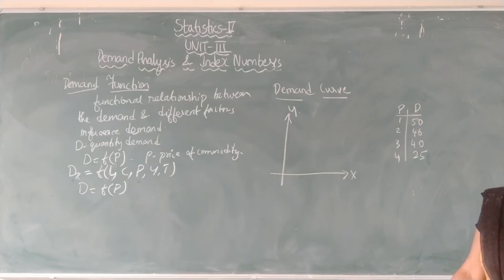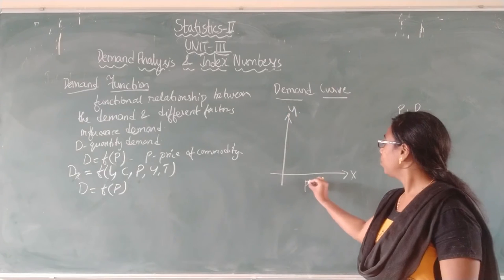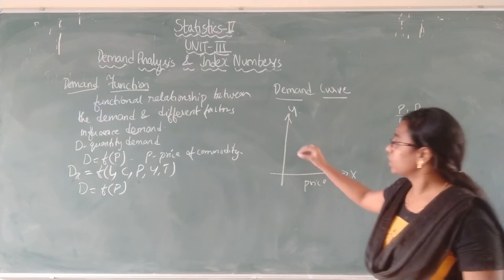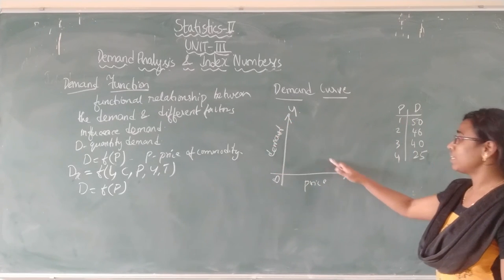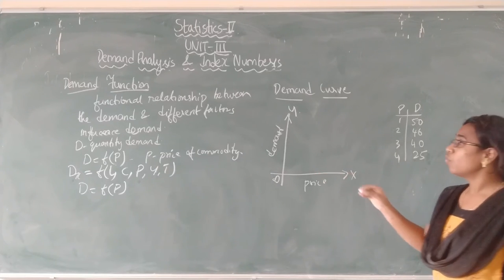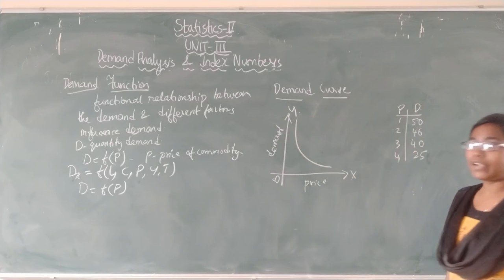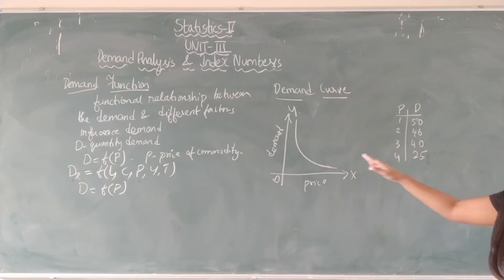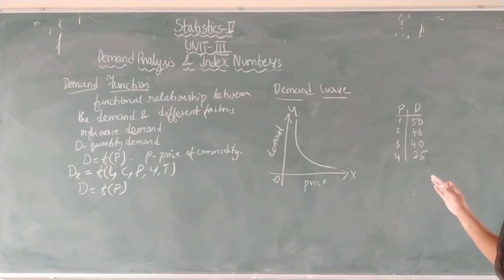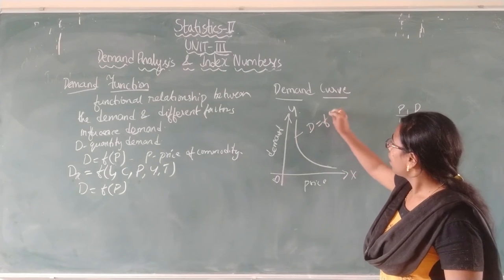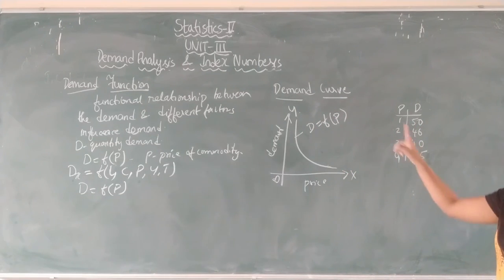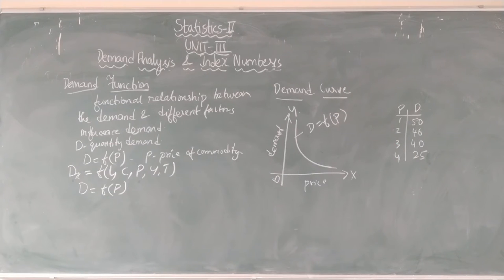On the X axis we will take the price; on the Y axis we will take the demand. If the price is increasing, the demand will decrease, so we will get a downward trend. If price keeps increasing, the demand keeps decreasing. So this is the demand curve, where the curve can be written as D equals F of P. This is about the demand function and demand curve.